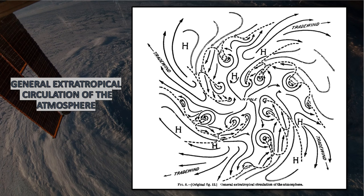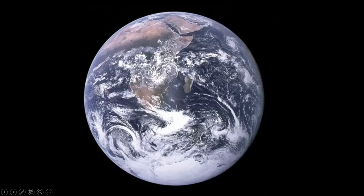These are examples of the general circulation, showing the comma-shaped formation of multiple cyclones.